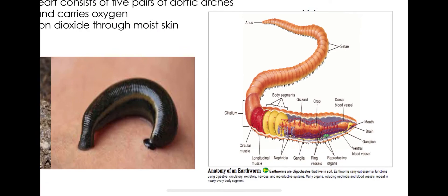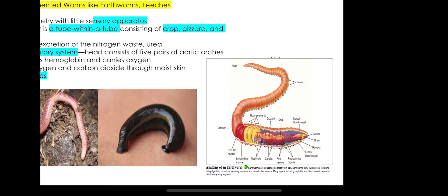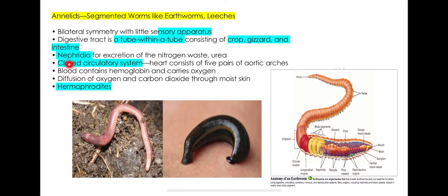Look at the digestive tube: food enters through the mouth, is stored in the crop, moves to the gizzard where it is broken down, and then passes into the intestine for completion of digestion. Each part of this tube has a specific function. They also have structures for getting rid of nitrogenous waste and urea, called nephridia.